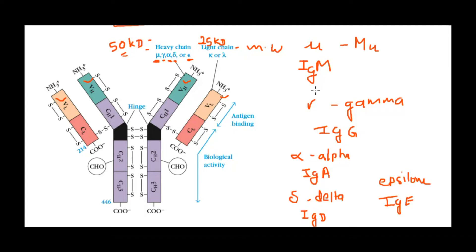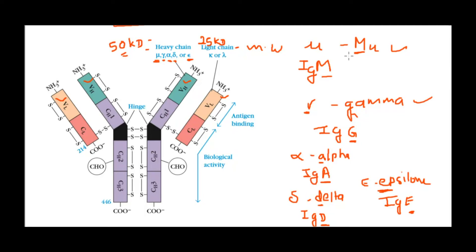Here is a trick to remember which heavy chain gives rise to which antibody: mu starts with M so it gives IgM, gamma starts with G so it gives IgG, alpha starts with A so it gives IgA, delta starts with D so it gives IgD, and epsilon starts with E so it gives IgE. Just look at the first letter of the heavy chain name.